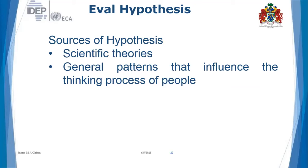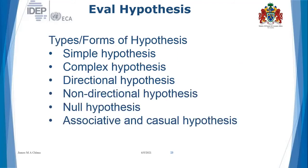Scientific theories are great candidates for testing hypotheses — they are where we can start to understand and generate new knowledge. What are the different forms or types of hypotheses? There are a number of them: simple hypothesis, complex hypothesis, directional hypothesis, non-directional hypothesis, null hypothesis, and associative and causal hypothesis.